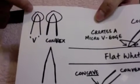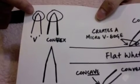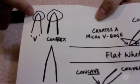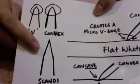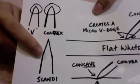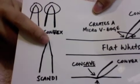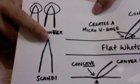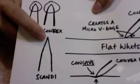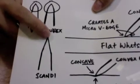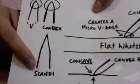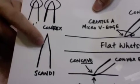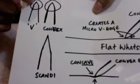This is the usual V-edge. And Scandi is like this. That means it combines the secondary, and it is a huge V-Grind. That means there are only two bevels. One over here, one here.